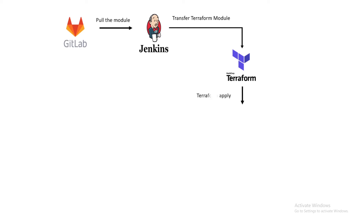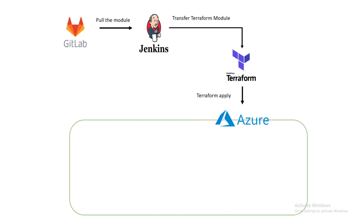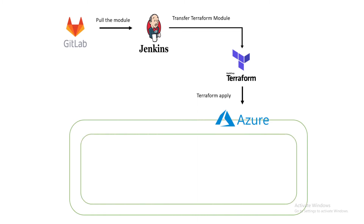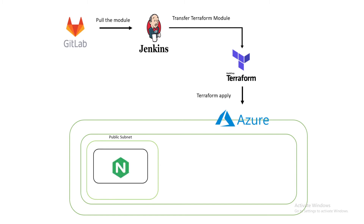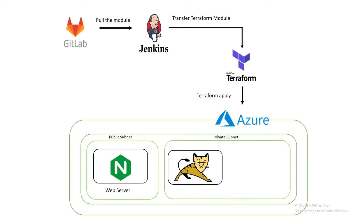In the final stage, Jenkins will execute Terraform apply on the Terraform server, which will provision Azure public virtual machine for web server, a private virtual machine for app server, and MySQL database. Finally, all public and private virtual machine instances and MySQL database will be provisioned in Azure.